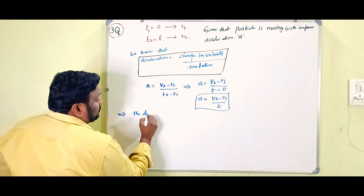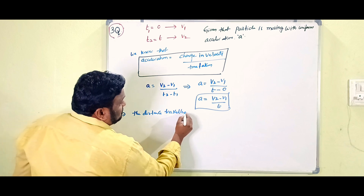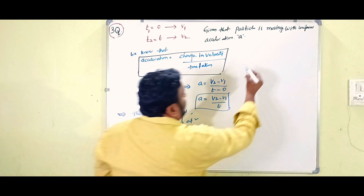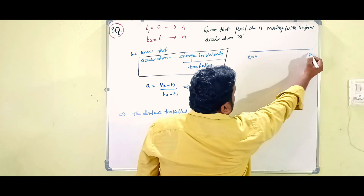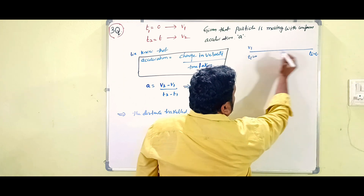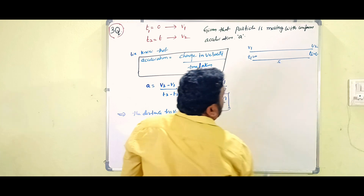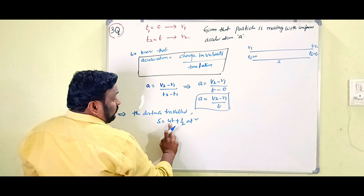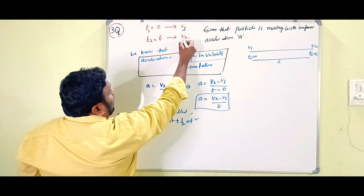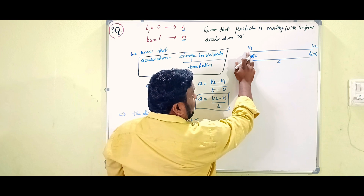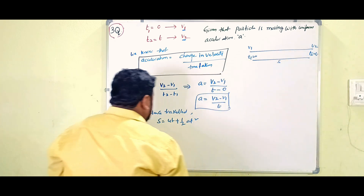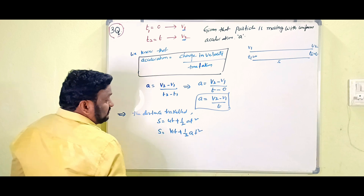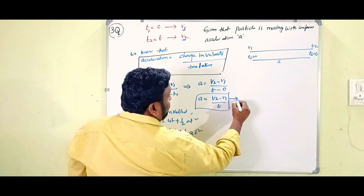For the distance travelled, we use the equation s = ut + ½at². Here t1 equals zero and t2 equals T; v1 is the initial velocity and v2 is the final velocity. So we write s = v1·T + ½·a·T². This is equation number 2.